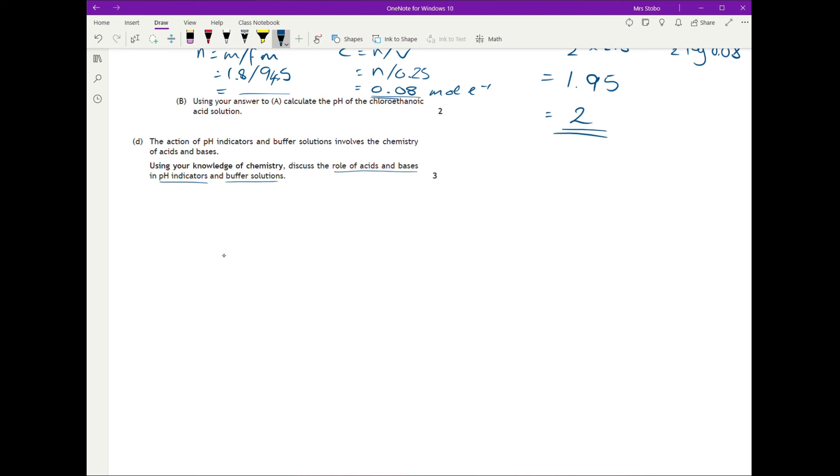So the role of acids and bases, I would split it into two parts. Firstly, in indicators and then in buffers. So in indicators, I'm expecting you to explain your dissociation of your hydrogen ions and your indicator ions and the fact that these are different colours. So you colour one here and colour two here. And the point at which this dissociation happens.